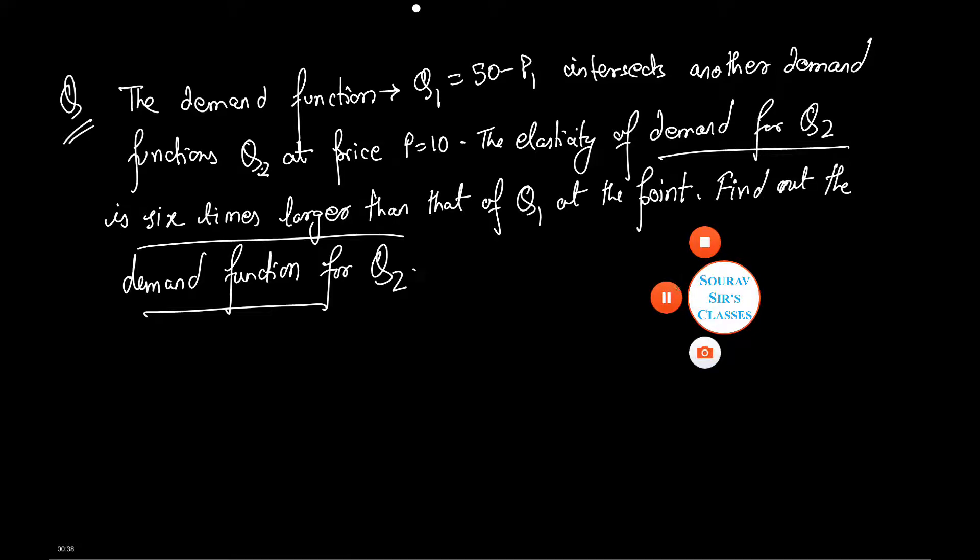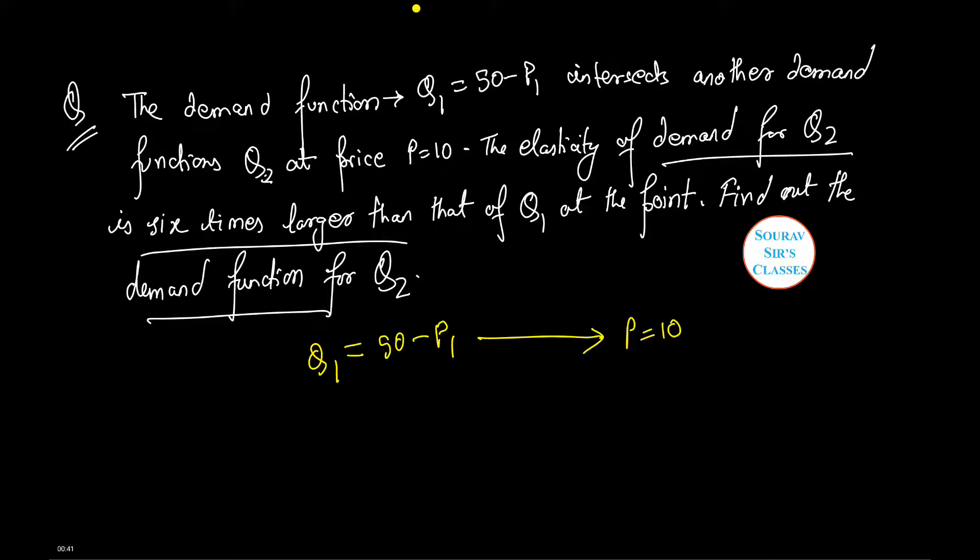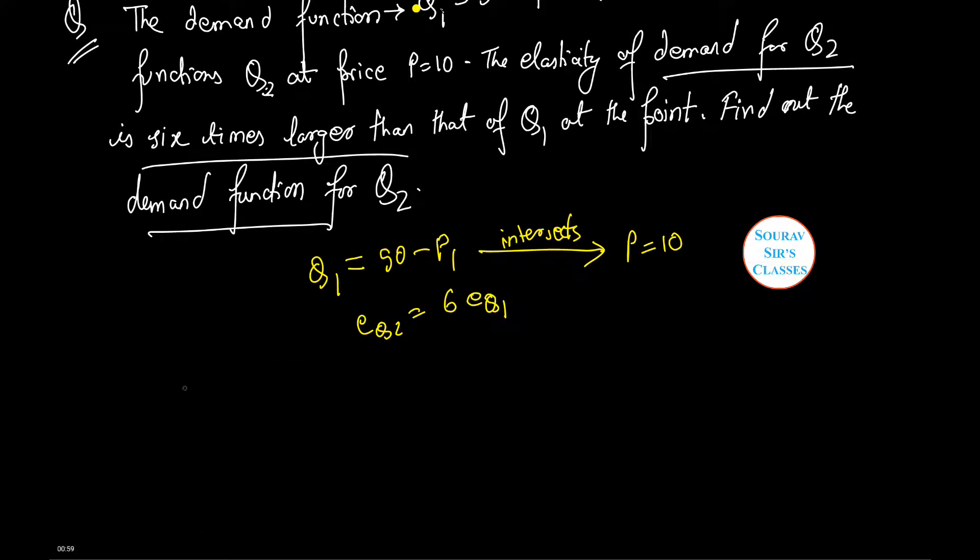Now from the question we have Q1 equals 50 minus P1 which intersects at P equals 10, and we have E_Q2 equals 6 times E_Q1. Let's put P equals P1 equals 10. We get Q1 equals 50 minus 10 which is 40.